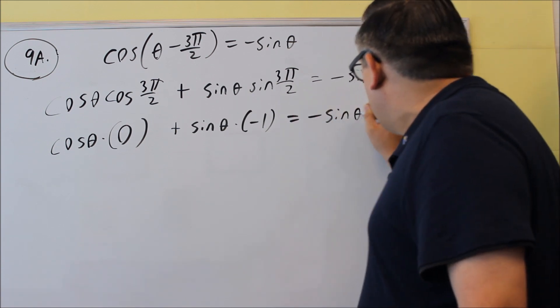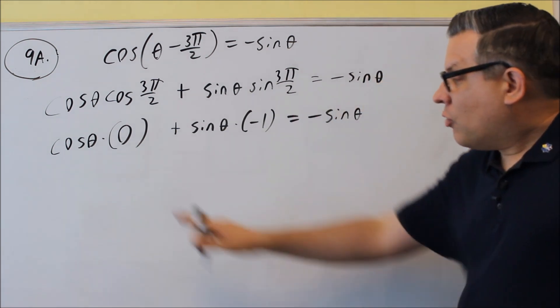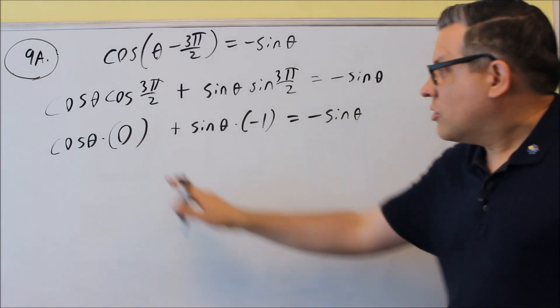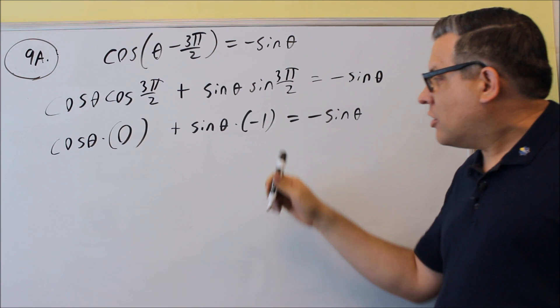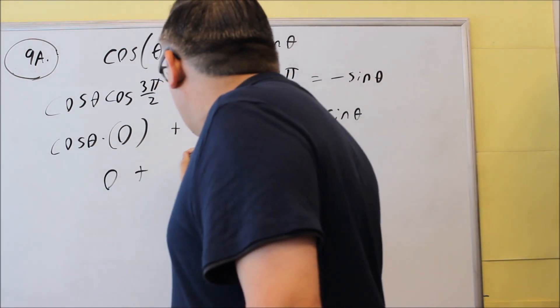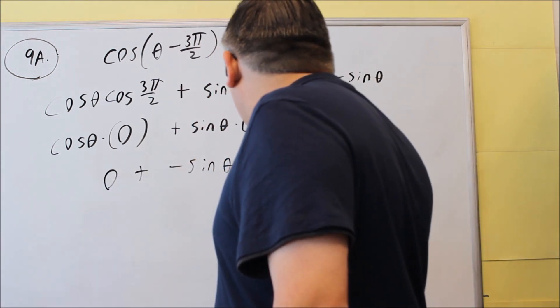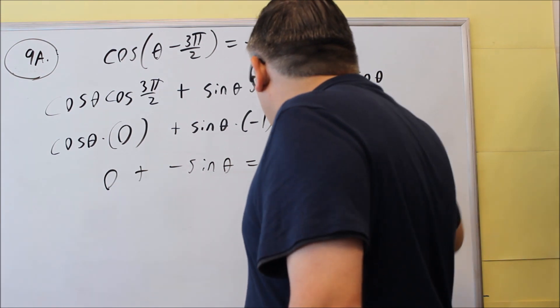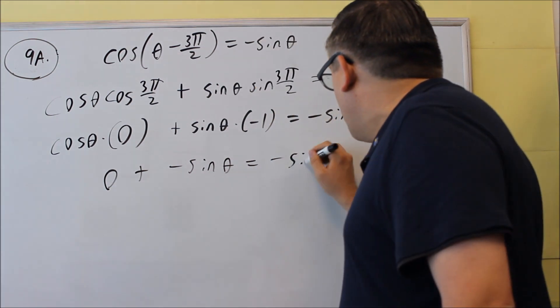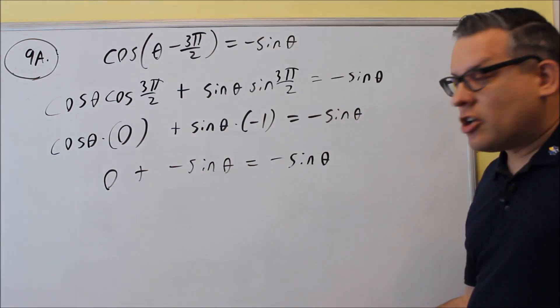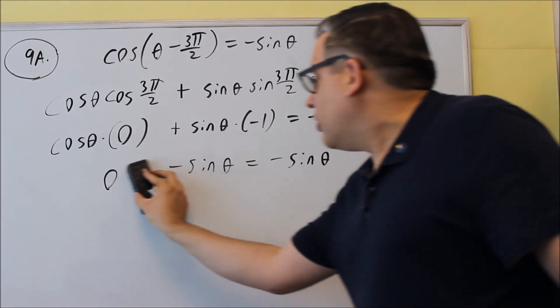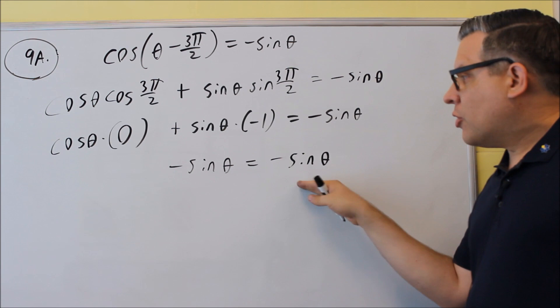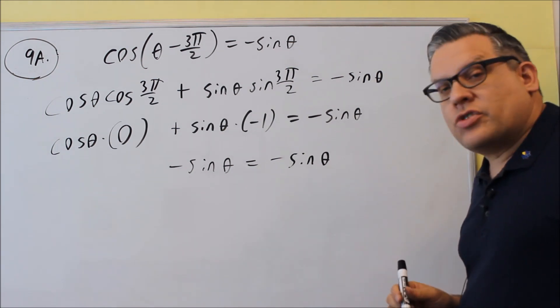And then we want to simplify this. Well zero times anything is zero, so that term is going to go away completely, and I just have sine times negative 1, so basically I have zero plus negative sine θ, and right here we get both sides equal. You don't even have to actually show the zero, but that's definitely what it would be, and then you get both sides equal, negative sine θ equals negative sine θ.